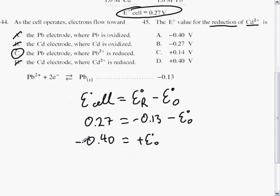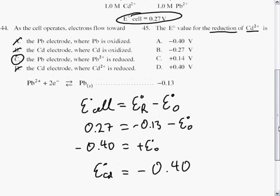Multiply both sides by negative 1. E° for our cadmium reaction is minus 0.40 when written as a reduction.